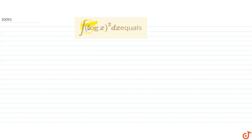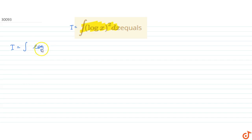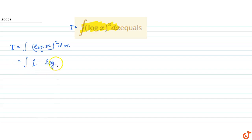In this question we have to integrate the function (log x)² dx. Let it be function I, that is I equals the integral of (log x)² dx. We can write this as the integral of 1 · (log x)² dx. We see that there are two different functions.